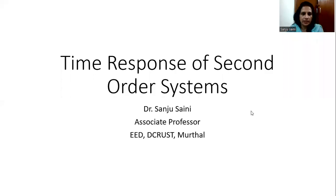Hello learners. In this video I am going to share the time response specifications of a second order system. The order of the system is given by the highest power of s in the denominator of the transfer function. In case the highest power of s in the denominator of the transfer function is 2, then it will be a second order system.